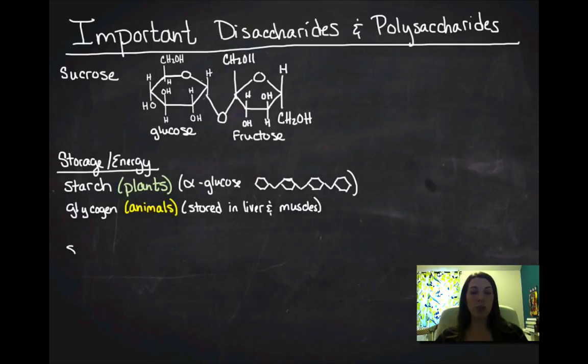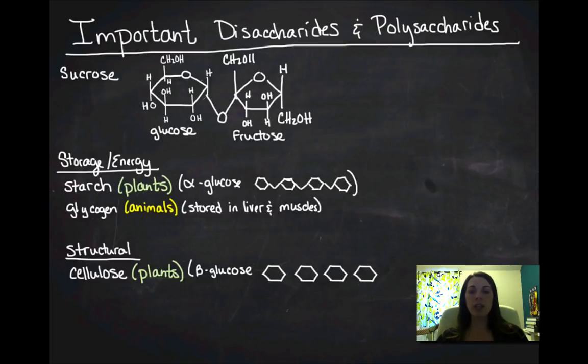So those are our storage molecules. Structural molecules are going to be cellulose. Cellulose is made by plants and it is actually a polysaccharide of beta glucose. So instead of all of those bonds being down, what you're going to end up with is you're going to end up with them alternating. So you've got one goes up, one goes down, one goes up. And this creates a different shaped molecule, which is going to not be able to be broken down by the enzymes that you have in your body. And so it's hard to digest, whereas starch is easy to digest. And that's just because we have enzymes that will break down the amylose. We have amylase in your saliva.